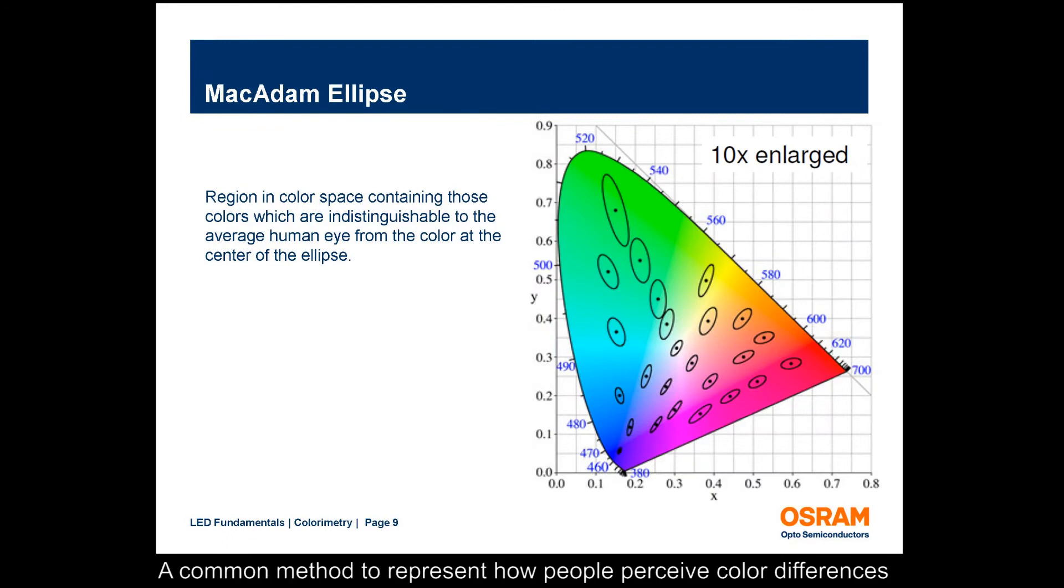A common method to represent how people perceive color differences is through the use of MacAdam ellipses. For a one-step ellipse, the color at the center and a color at the edge of the ellipse are indistinguishable.